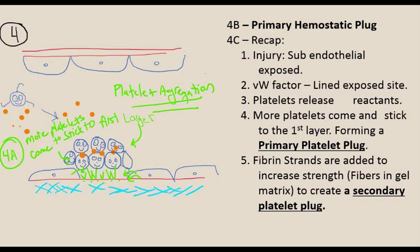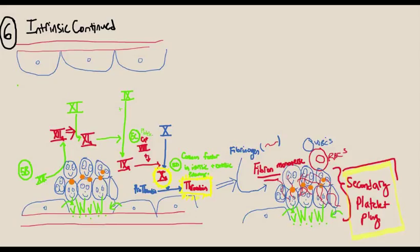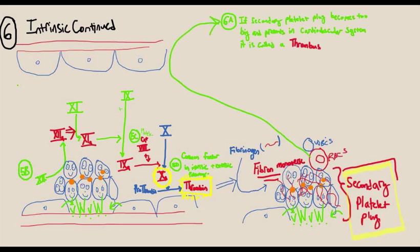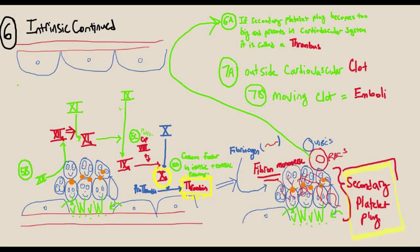Some problems that can occur during this process: if the secondary platelet plug becomes too big and gets ripped off into the cardiovascular system, it can create a thrombus. A clot outside the cardiovascular system is a thrombus. A moving thrombus is an embolus, so a thromboembolus is a moving clot.